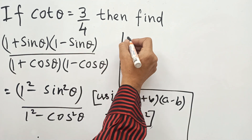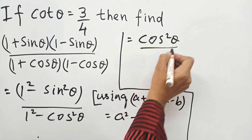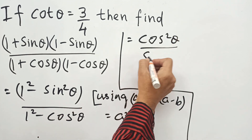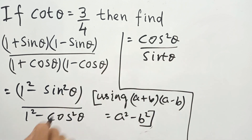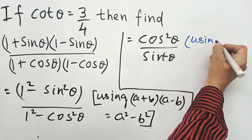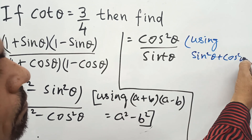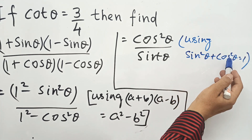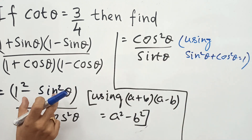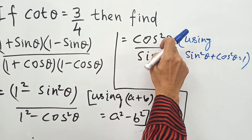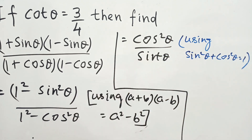Now, 1 minus sin squared θ is equal to cos squared θ, and 1 minus cos squared θ is equal to sin squared θ. These are identities of trigonometry, derived using sin squared θ plus cos squared θ equals 1.